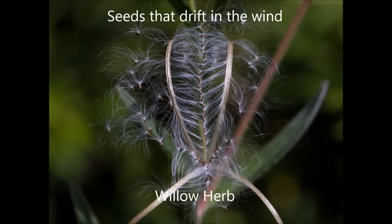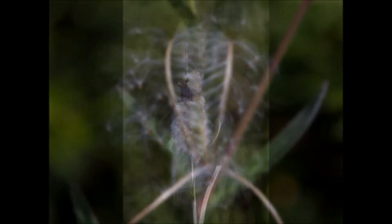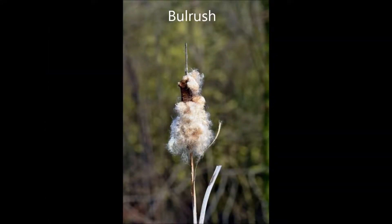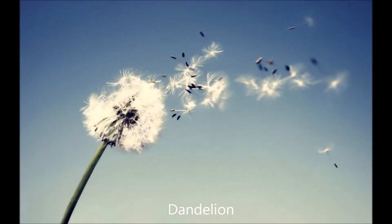Seeds that drift in the wind. Seeds that have almost weightless additions that enable them to be carried over long distances by the slightest breeze are familiar all over the world. These flimsy additions are usually various sorts of fluff which are almost weightless but increase the volume of the seed so that it can be picked up by the slightest breeze and carried over long distances. Examples of seeds spread by this method are willow herb, bulrush, and dandelion.